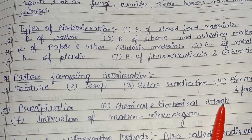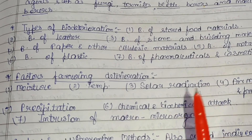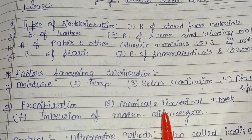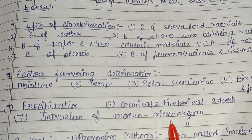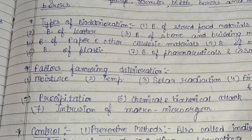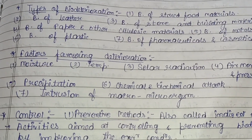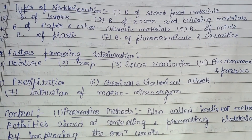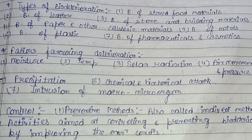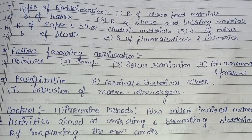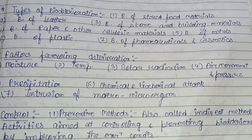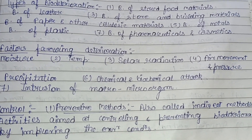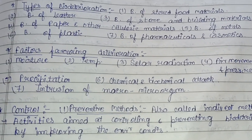Chemical and biochemical attack is also a factor, as is intrusion of macro or microorganisms. Moving to control methods: first are the preventive methods, also called indirect methods — activities aimed at controlling and preventing bio deterioration by improving environmental conditions.